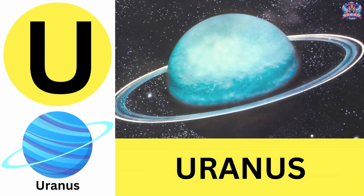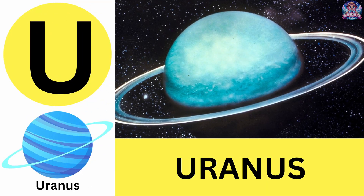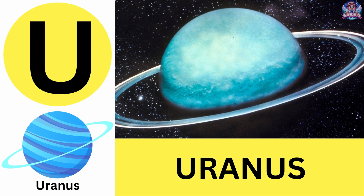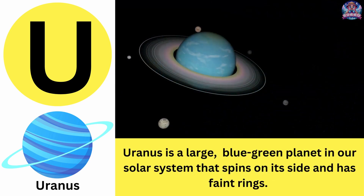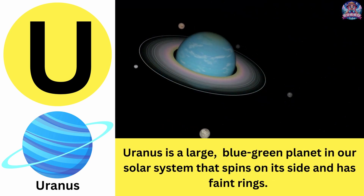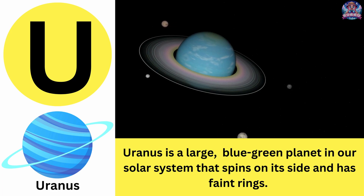U. U is for Uranus. Uranus is a large, blue-green planet in our solar system that spins on its side and has faint rings. Uranus.